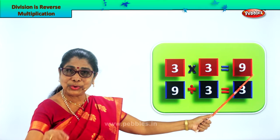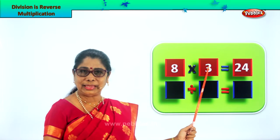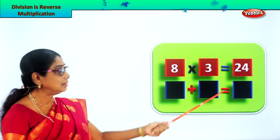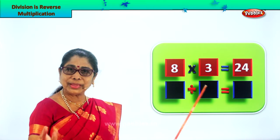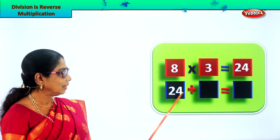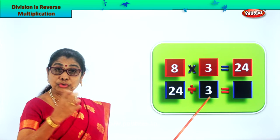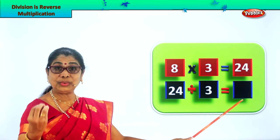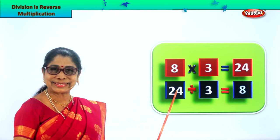Shall we look at another sum? Division is reverse multiplication. Look carefully. Here you have eight into three — eight multiplied by three. Eight threes are — say your eight times table. Eight threes, or three eights, whatever. What is the answer? 24. Eight into three is 24. Now when we divide 24, we are going to divide 24 by three. How many times will three go into 24? Eight threes are 24 — three will go into 24 eight times. So our answer is eight.